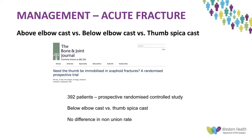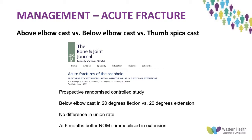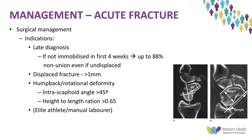A prospective randomized controlled study in the Bone and Joint Journal, looking at 392 patients, found no difference in the non-union rate between a below-elbow cast and a thumb spica cast. Another prospective RCT in the same journal compared below-elbow cast at 20 degrees of wrist flexion versus 20 degrees of extension, finding no difference in union rates at six months, but patients immobilized in extension had better range of movement.